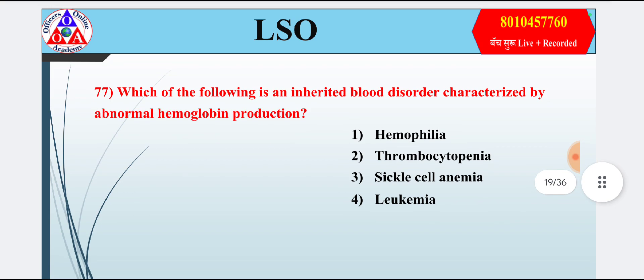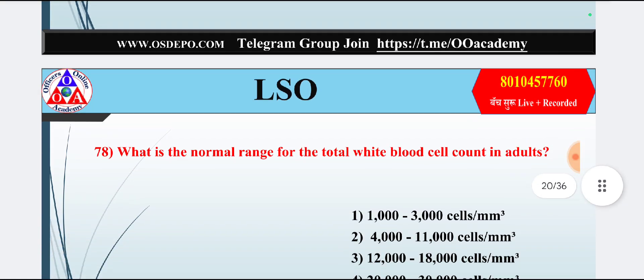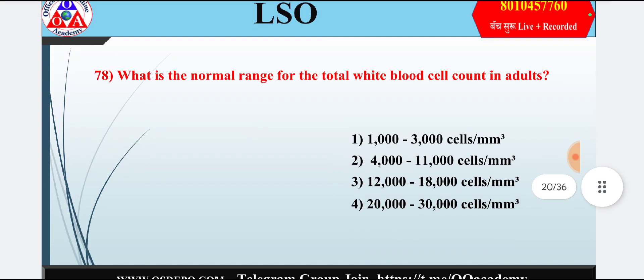Question 17: Which of the following is an inherited blood disorder characterized by abnormal hemoglobin production? Option 1: hemophilia; option 2: thrombocytopenia; option 3: sickle cell anemia; option 4: leukemia. Answer is option 3 — sickle cell anemia.